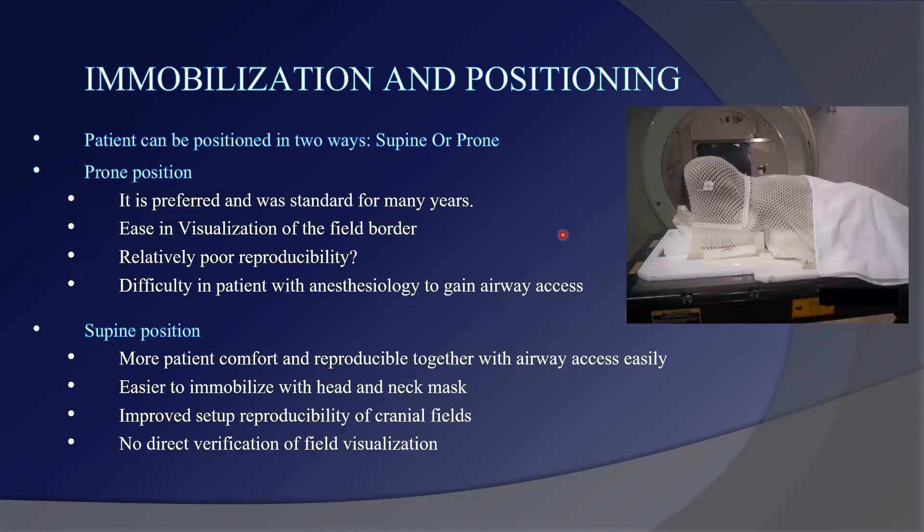Immobilization and positioning: the patient can be positioned in two ways — supine or prone. Prone position was preferred and was standard for many years, but it has relatively poor reproducibility and difficulty with anesthesia airway access. Supine position is more comfortable and reproducible, easier to immobilize with a head and neck mask, and offers improved reproducibility of the cranial field, though it has no data verification advantage.